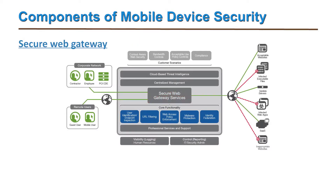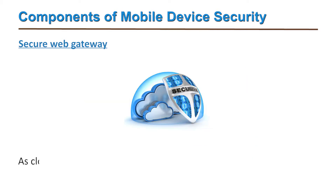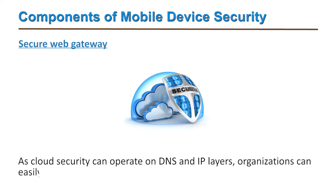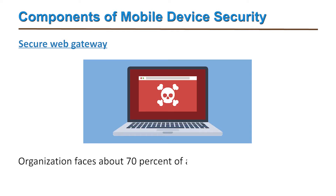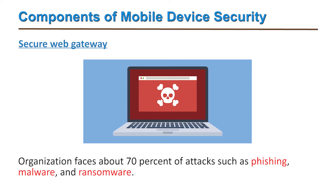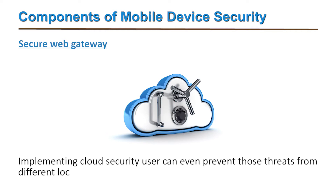The third component is secure web gateway, which is based on the overarching power of cloud security. Cloud security can operate on domain name systems and various internet protocol layers, enabling organizations to identify attacks even before they are launched. Organizations face about 70 percent of attacks such as phishing, malware, and ransomware through these vectors, and implementing cloud security can prevent threats from different locations.